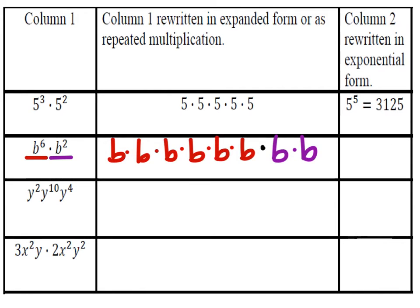Now looking at this, we can see that all of these bases are the same, right? It's just a bunch of b's being multiplied together, so if we were to write this now in exponential form in this second column, we have a base that's b, and then how many times is it being multiplied by itself. And we can go ahead and count those, and if you did, you would find that there were 8 of these b's.